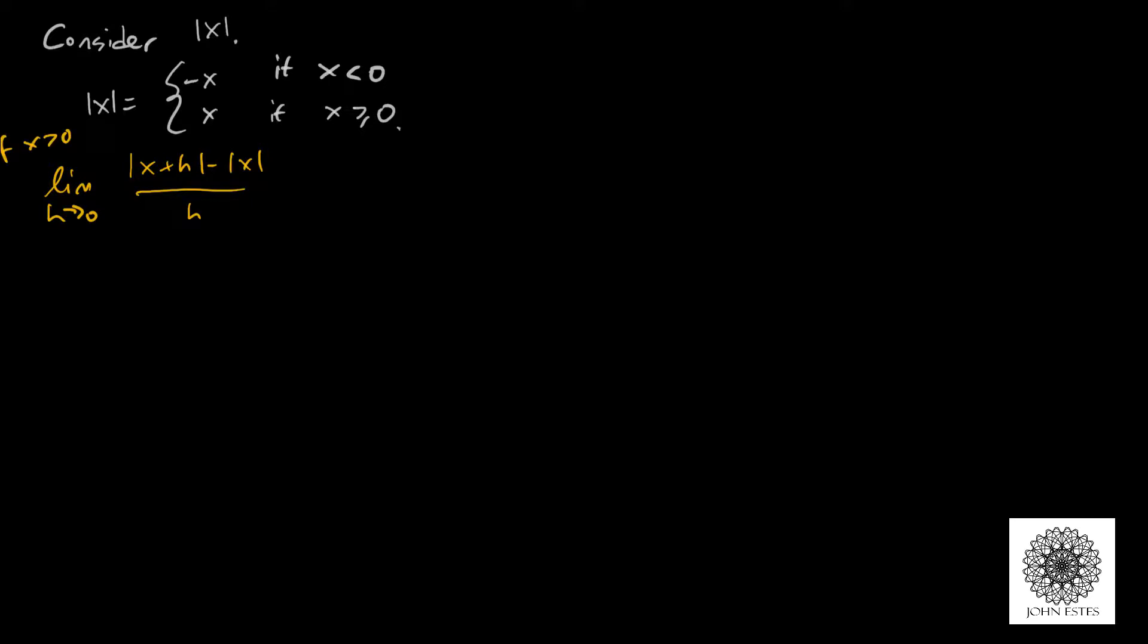If x is greater than 0, then this limit is simply—well, you can just drop the absolute values because they're positive. And so I end up with x plus h minus x over h, which ends up being h over h, which just gives me 1.